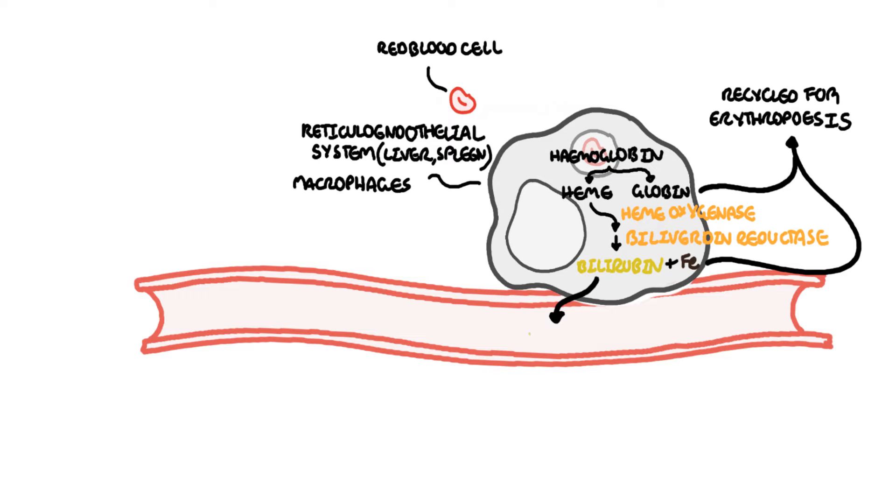The bilirubin formed is in an unconjugated form, so it's unconjugated bilirubin and it is lipid soluble, so it has to bind to something. Albumin is the protein which acts as a transporter. This unconjugated bilirubin is bound to albumin, but it also can bind to other things such as high density lipoproteins, and less often it can circulate freely in an unbound form.